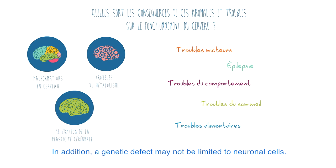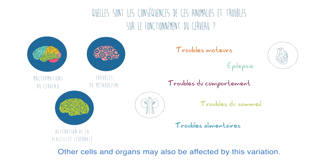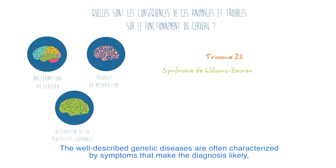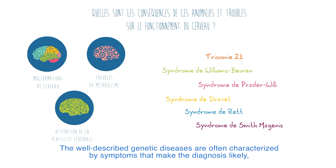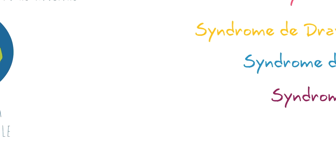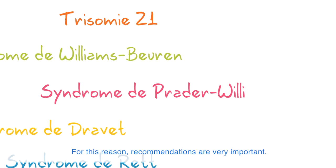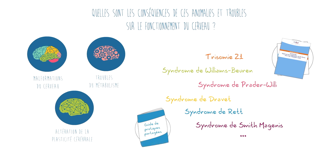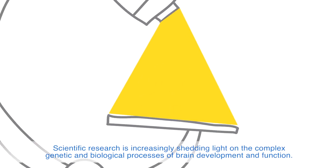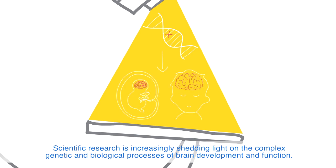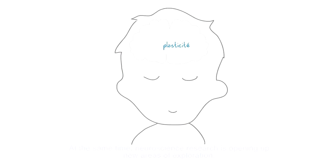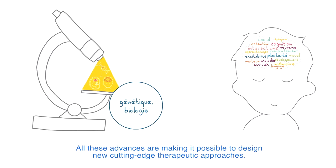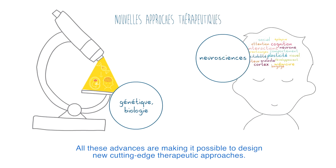In addition, a genetic defect may not be limited to neuronal cells — other cells and organs may also be affected by its variation. The well-described genetic diseases are often characterized by symptoms that make the diagnosis likely and ensure specific medical follow-up. Even with the same genetic disease, every case is unique. Scientific research is increasingly shedding light on the complex genetic and biological processes of brain development and function, and neuroscience research is opening up new areas of exploration, making it possible to design new cutting-edge therapeutic approaches.